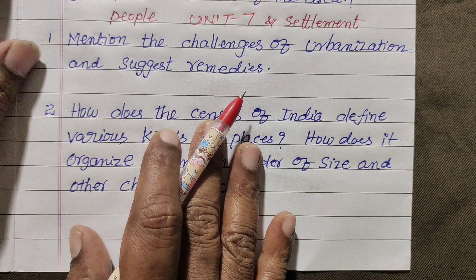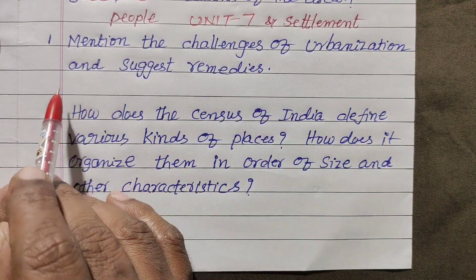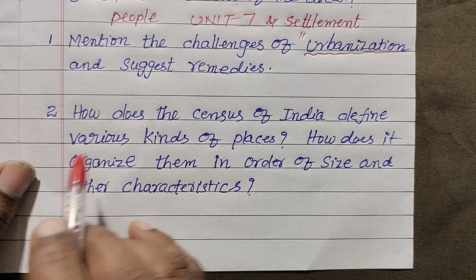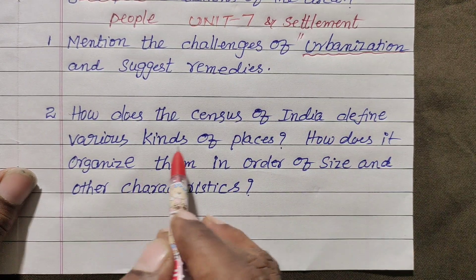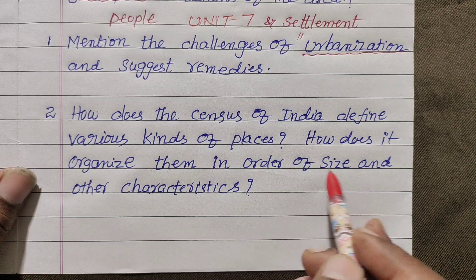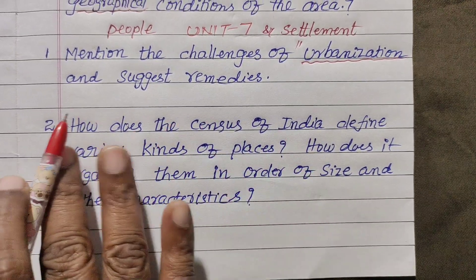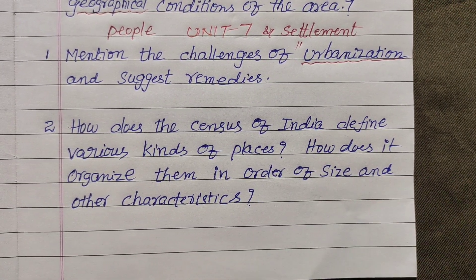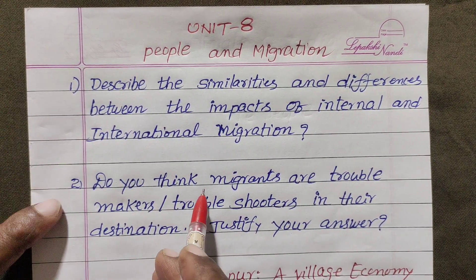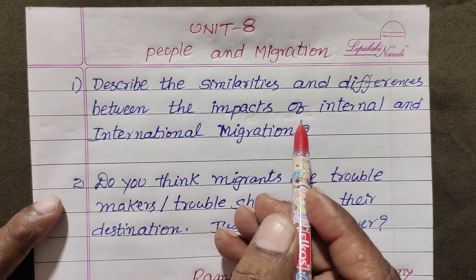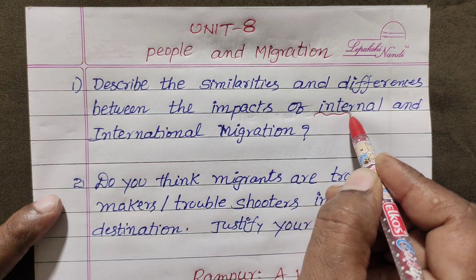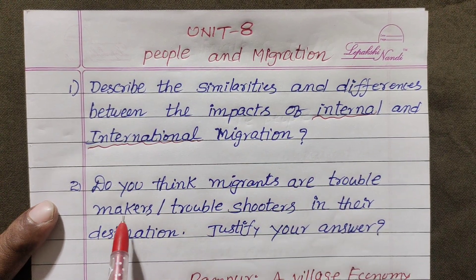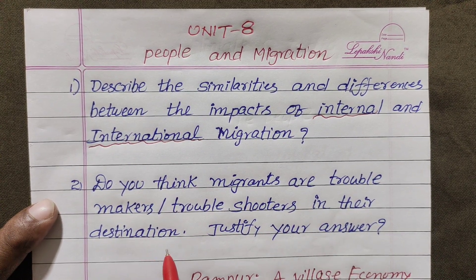Unit 7: People and Settlement. First question: mention the challenges of urbanization and suggest remedies. Second question: describe the similarities and differences between the impacts of internal and international migrations on the place of origin and destination. Do you think migrants are troublemakers or troubleshooters in their destination? Justify your answer.